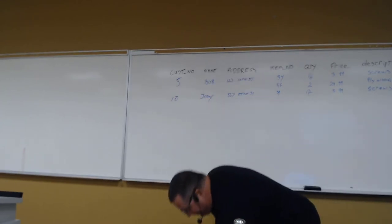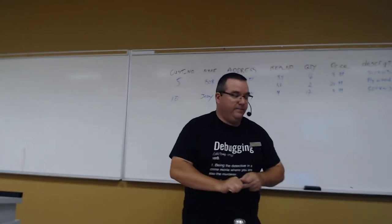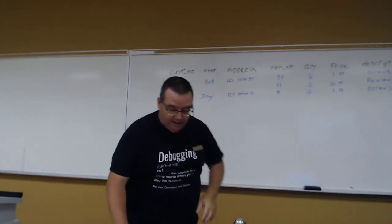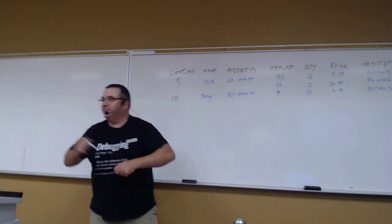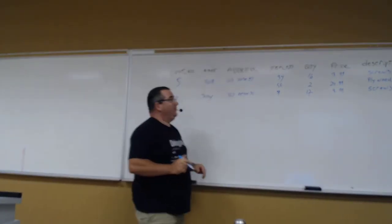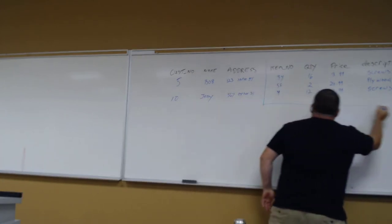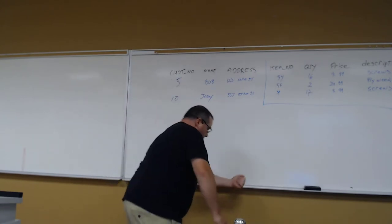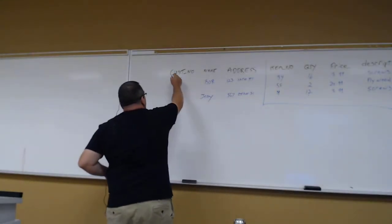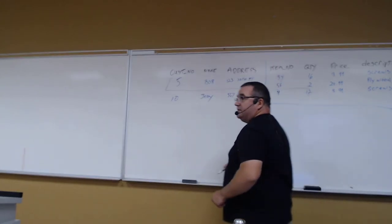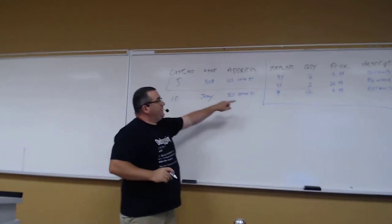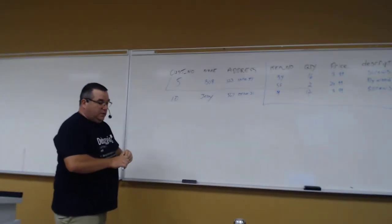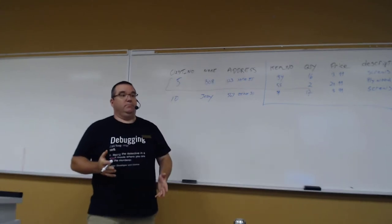Okay, that should be enough data to make my point. Right now we have unnormalized data — it's not even in first normal form. We have a multivalued set of attributes. Bob here has two entries but the row is not fully populated, which means we can't pull up that row of data. Also, the other reason it's not in first normal form: we haven't identified the candidate keys.